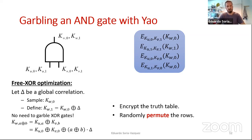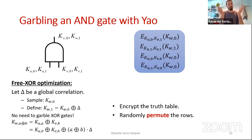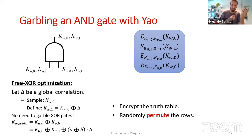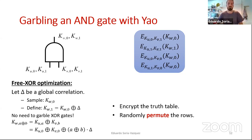If you want to evaluate an XOR gate, it's very simple. You take your two input keys — the key for the left wire and right wire — you XOR them. Thanks to this correlation, the XOR of these keys is either going to be the XOR of the keys for value zero of the input wires, or that plus delta. Those are the only two options, and you can keep going. This is how you get XOR gates for free.